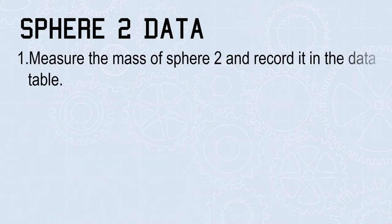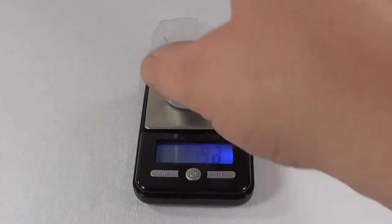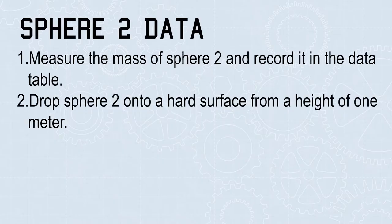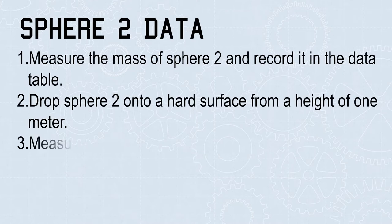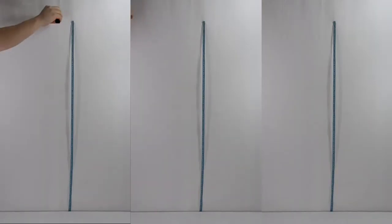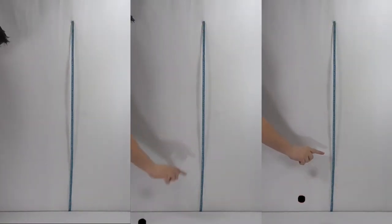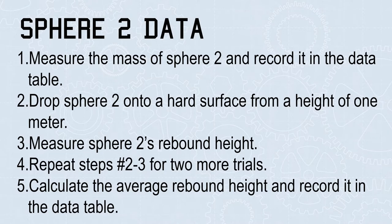Sphere 2 works the same way. Measure the mass of Sphere 2 and record it in the data table. Drop Sphere 2 onto a hard surface from a height of 1 meter. Measure Sphere 2's rebound height. Repeat these steps for two more trials. Then calculate the average rebound height and record it in the data table.